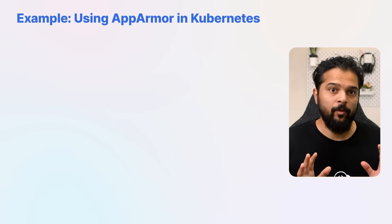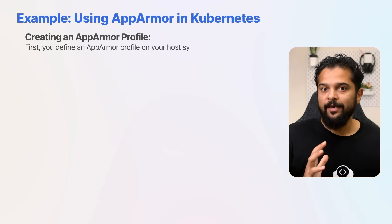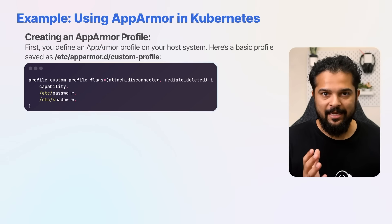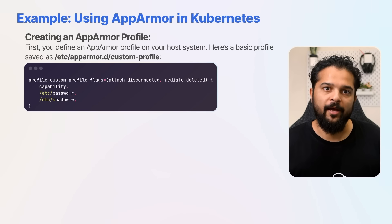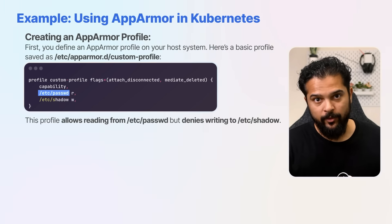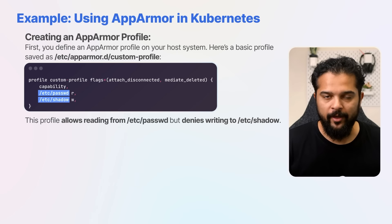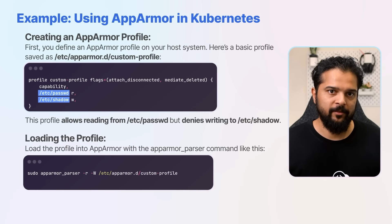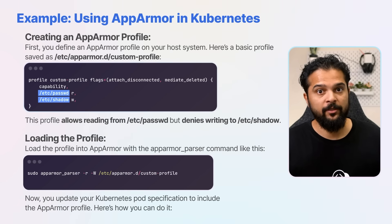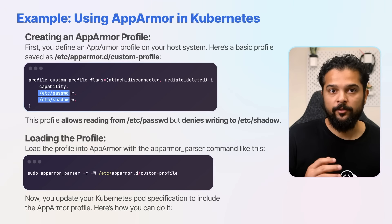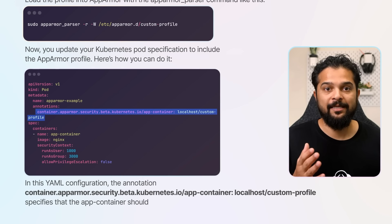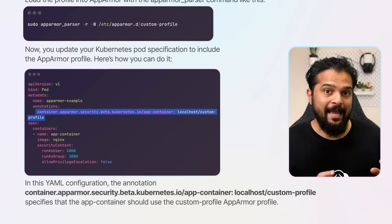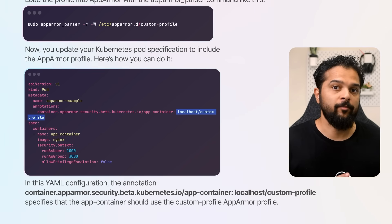Let's walk through a simple example of how AppArmor can be used in Kubernetes. First, you define an AppArmor profile on your host system — here's a basic profile saved as /etc/apparmor.d/custom-profile. This profile allows reading from the etc/passwd file but denies writing to the etc/shadow file. Next, you load the profile using the AppArmor parser command. Then you update your Kubernetes pod specification to include the AppArmor profile. In the YAML configuration, the annotation container.apparmor.security.beta.kubernetes.io/app-container specifies that the container should use the custom AppArmor profile.